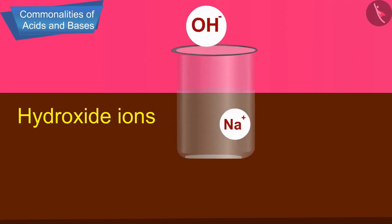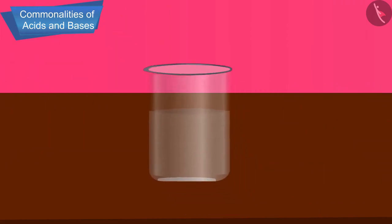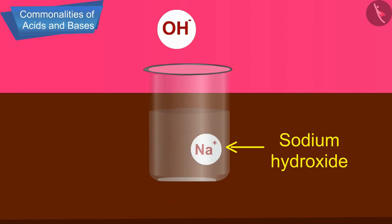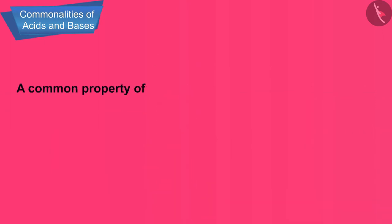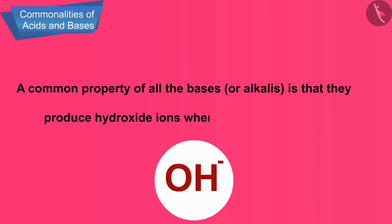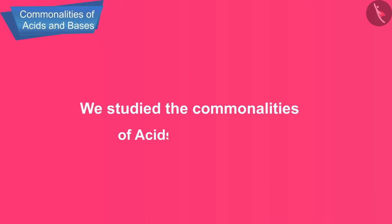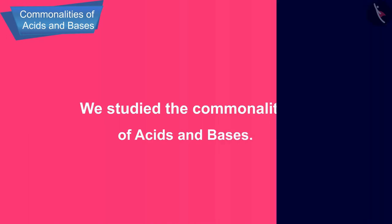Bases produce hydroxide ions, OH⁻, when dissolved in water. For example, sodium hydroxide is a base because it dissolves in water to produce hydroxide ions. So we can conclude that a common property of all bases or alkalis is that they produce hydroxide ions when dissolved in water. In this video we studied the commonalities of acids and bases. In the next video we will learn about pH.